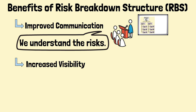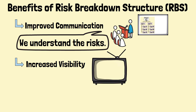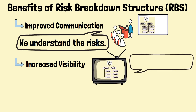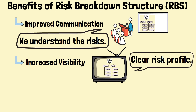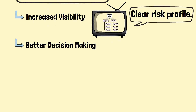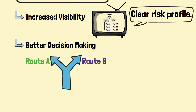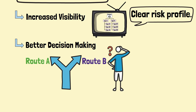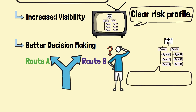Benefit number two: increased visibility. The risk breakdown structure provides a clear overview of a project's overall risk profile, making it easier to understand and manage these risks. Benefit number three: better decision-making. By categorizing and prioritizing risks, the RBS supports informed decision-making when it comes to risk response strategies.